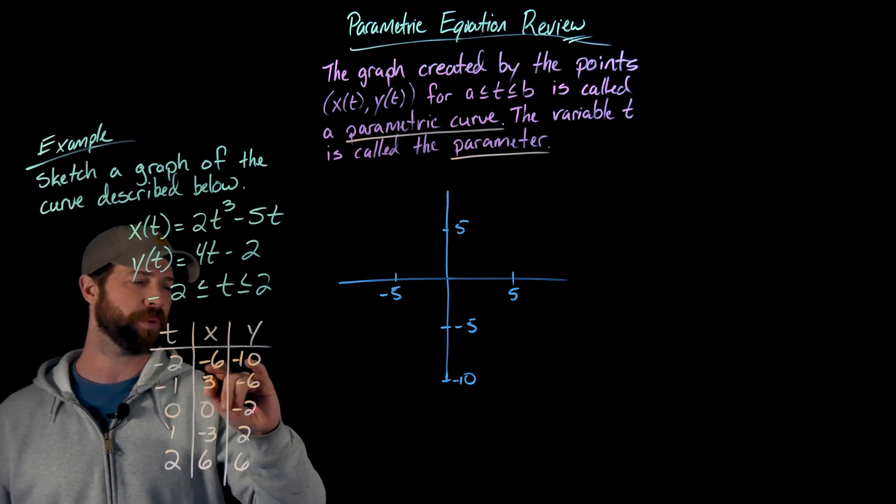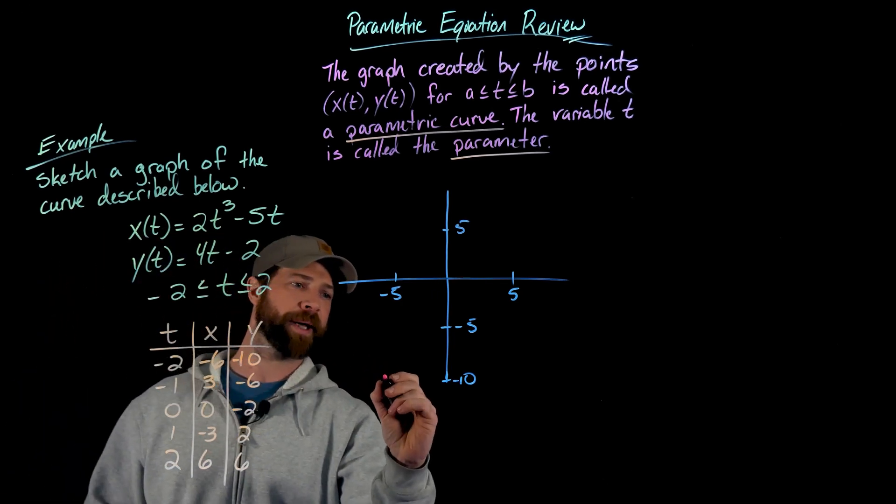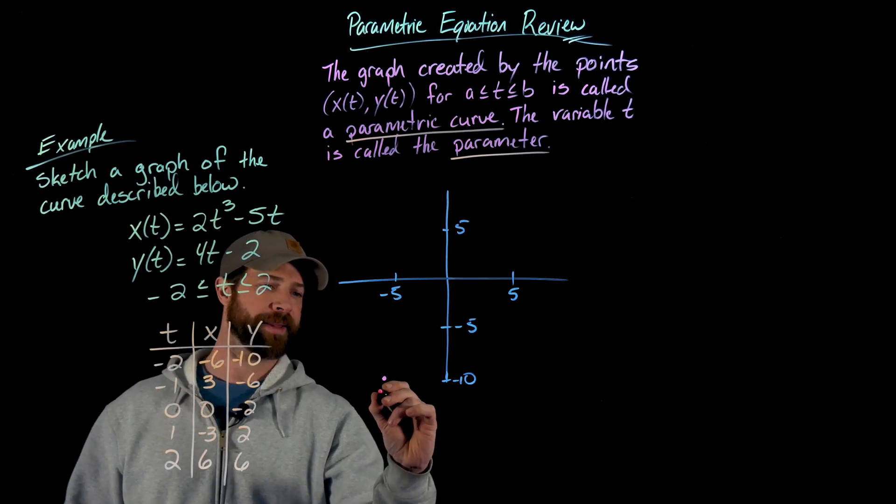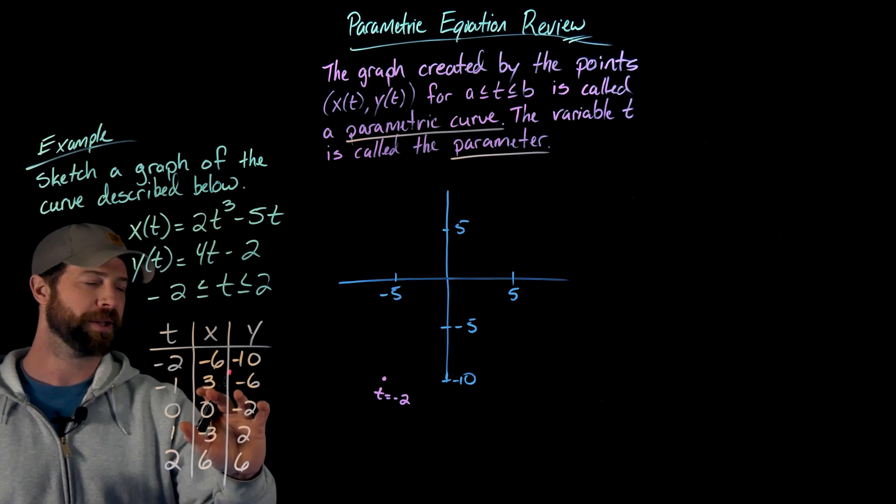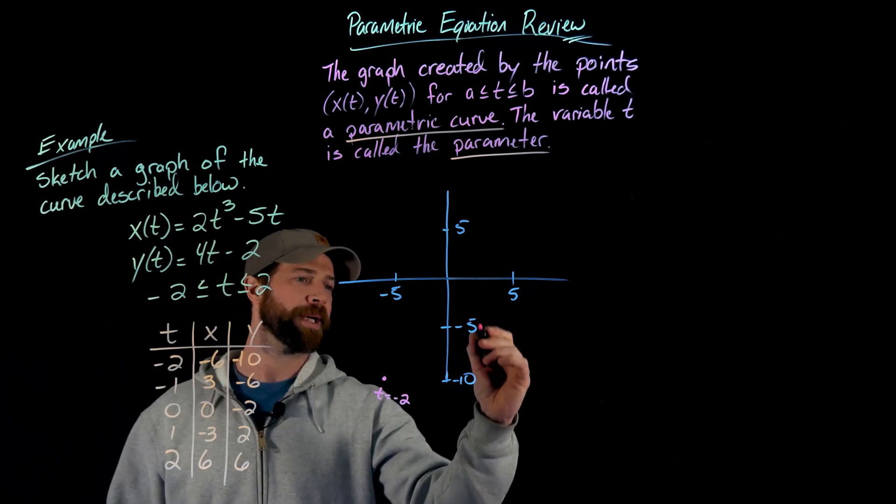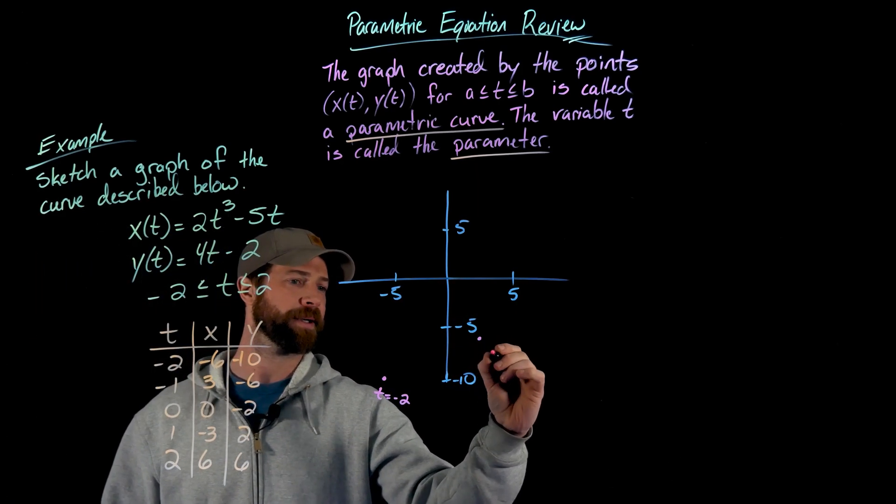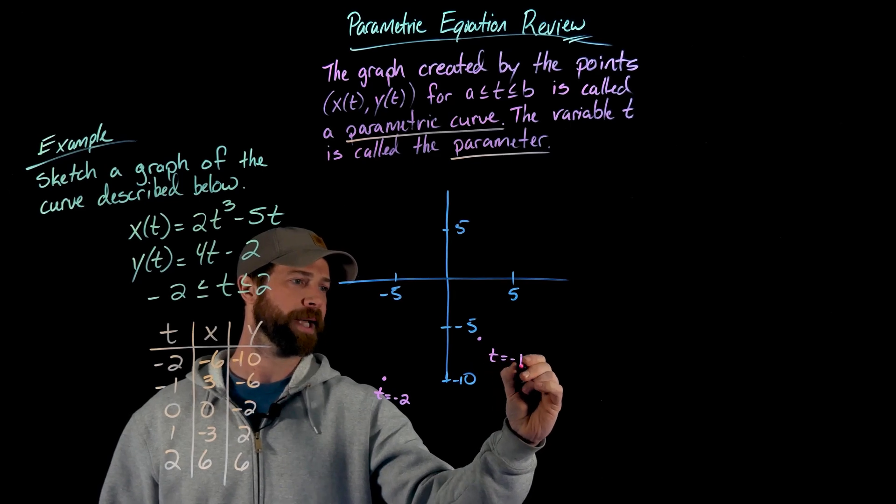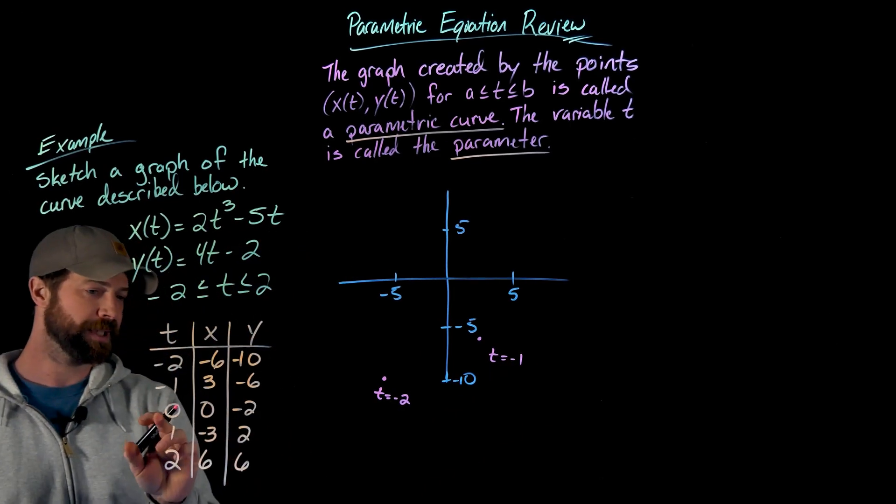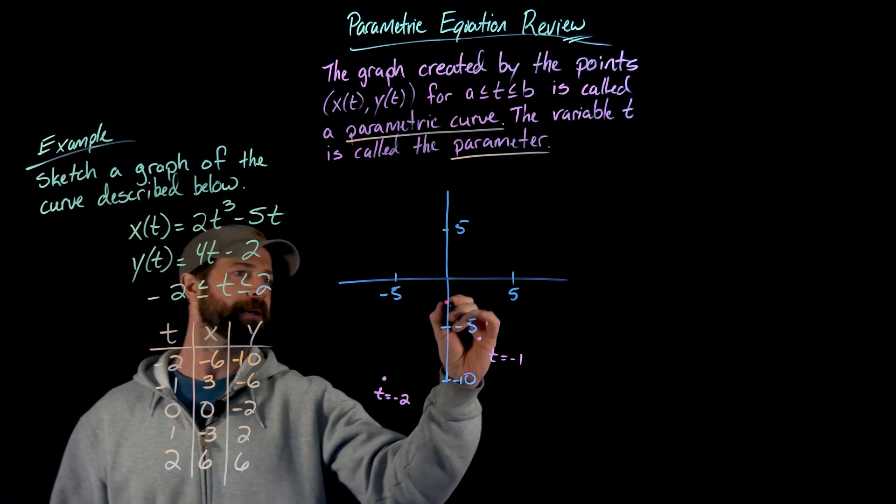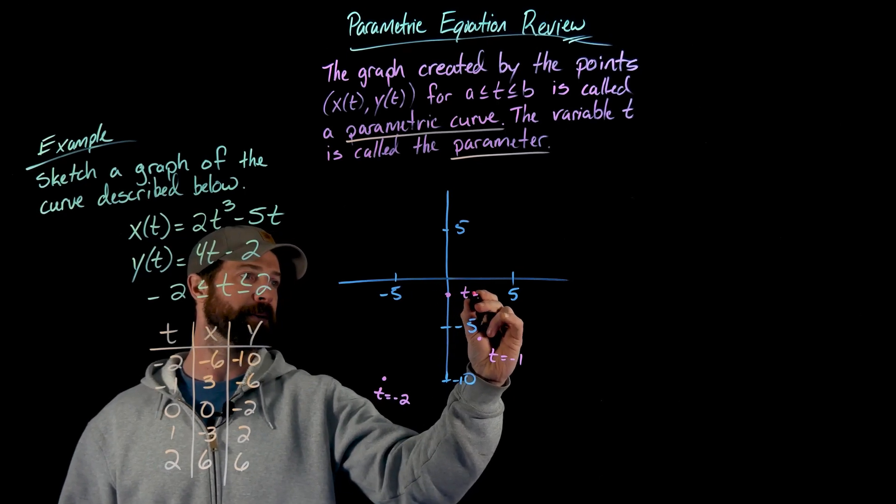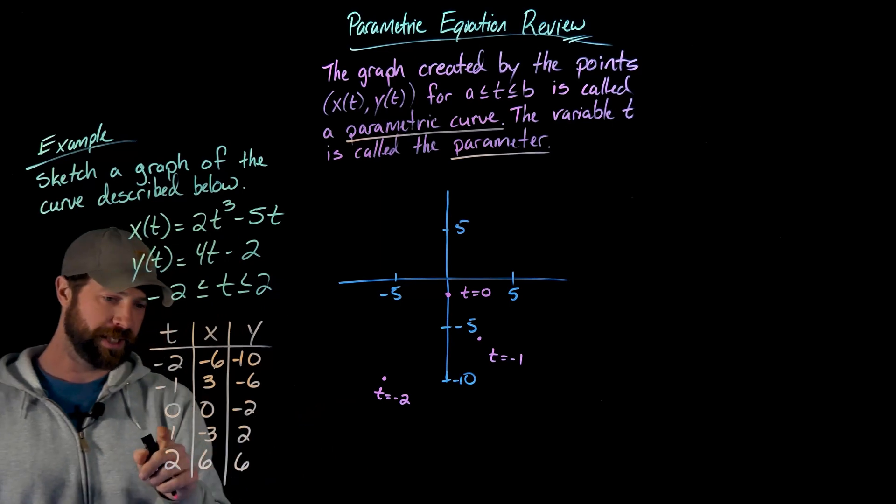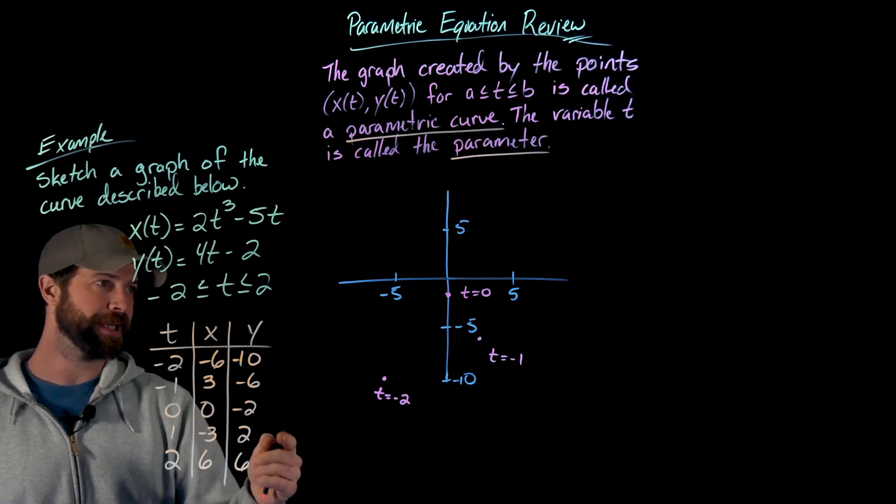Let me just show you this first one real fast. This is x equals negative six, y equals negative ten. That point is about right here and that's the value when t equals negative two. And then three, negative six, so three and then negative six right here. This is when t equals negative one. When t is equal to zero I'm at zero, negative two. So I'm right there and that was t equal to zero.